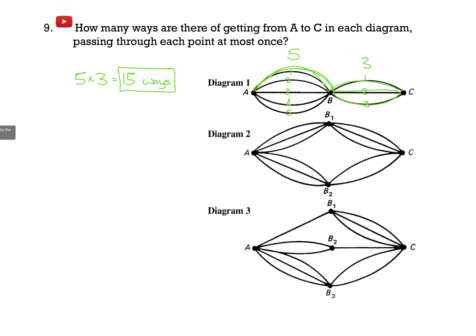Now for diagram 2, same idea. To go from A to B1, there are three ways. To go from A to B2, there are three ways. From B1 to C, we have three ways. And from B2 to C, there are two ways.